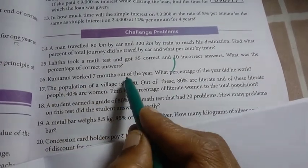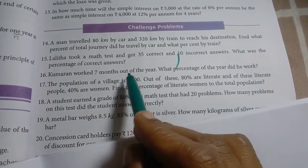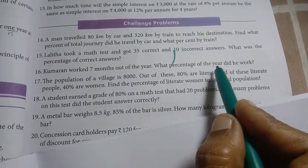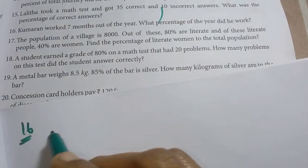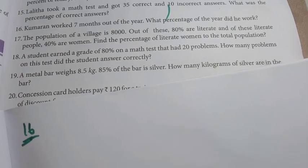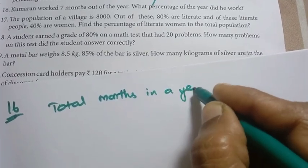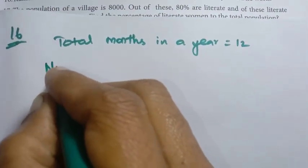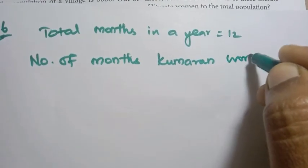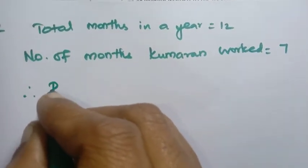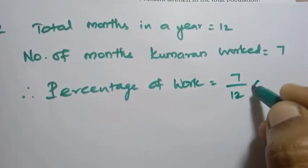16th problem: Kumaran worked 7 months out of the year. What percentage of the year did he work? Kumaran worked 7 months. Total months in a year is 12 months. Number of months Kumaran worked equals 7 months. Therefore percentage of work = 7 by 12 into 100 percent.